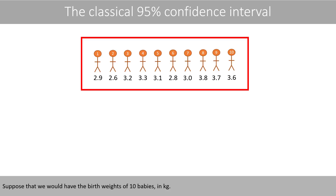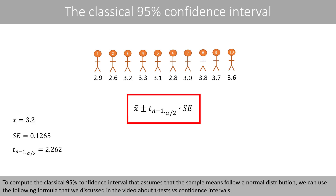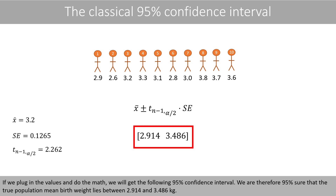Suppose that we have the following birth weights of 10 babies in kilos. To compute the classical 95% confidence interval, which assumes that the sample means follow a normal distribution, we can use the following formula that we discussed in the video about t-tests versus confidence intervals. If we plug in the values and do the math, we will get the following 95% confidence interval. We are therefore 95% sure that the true population mean birth weight lies between 2.914 and 3.486.